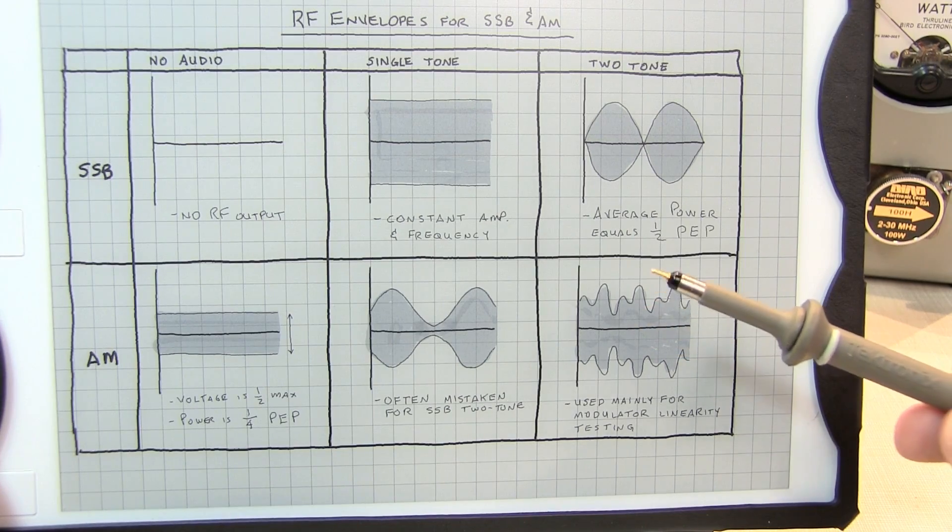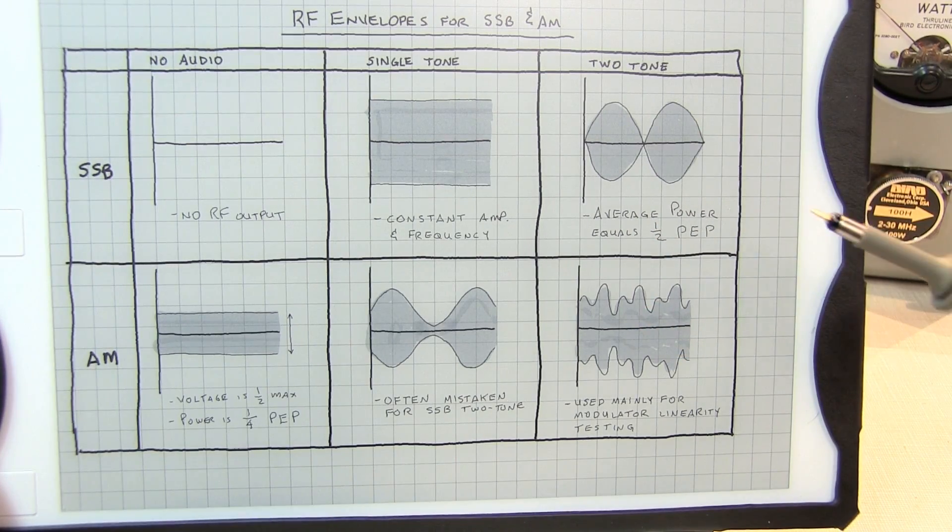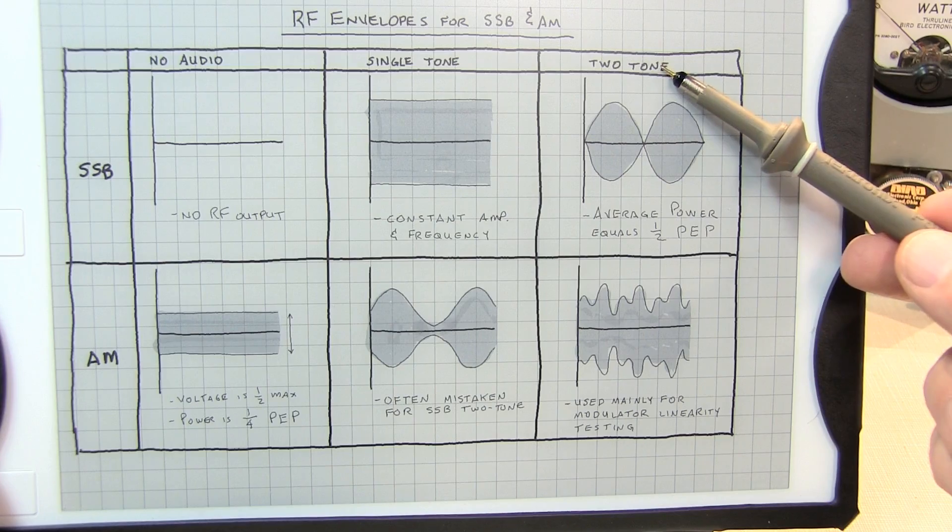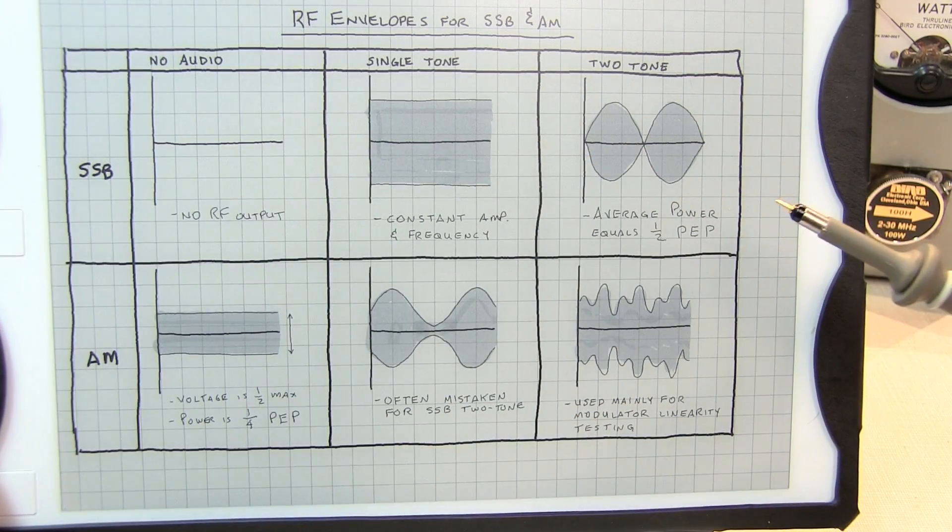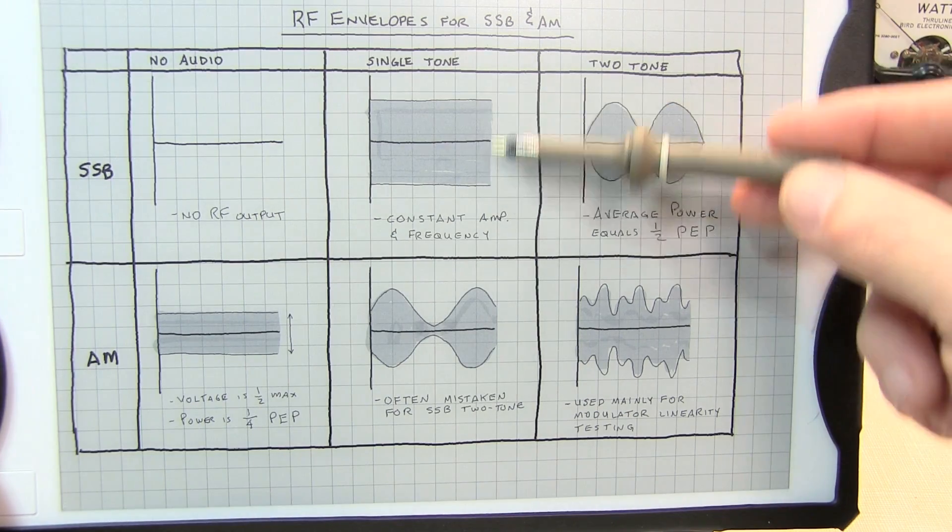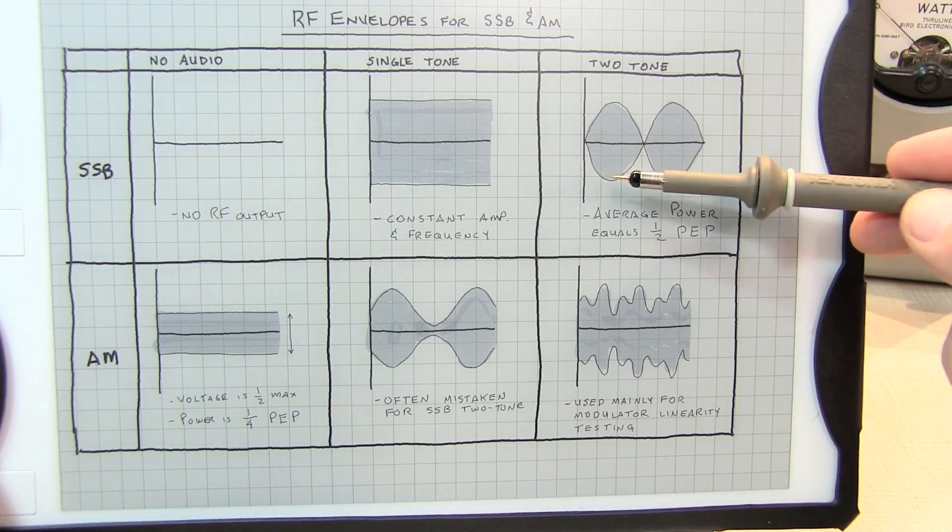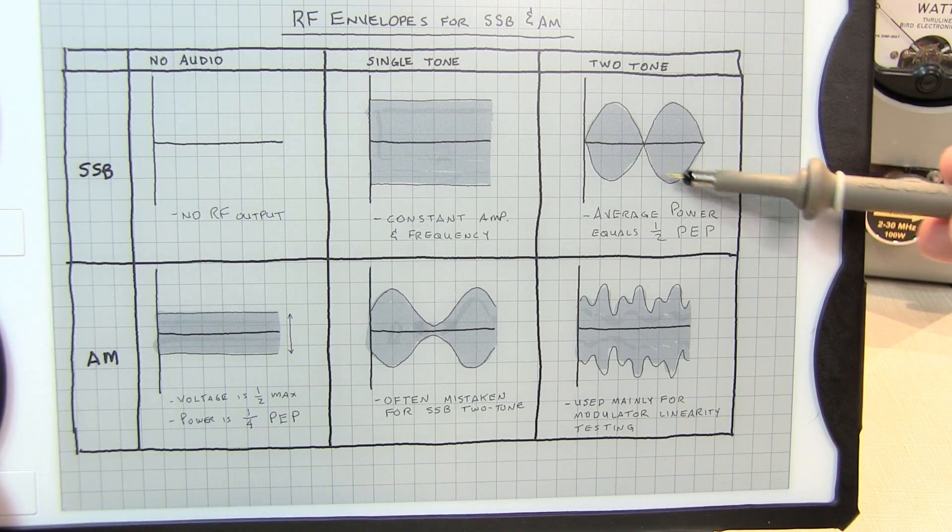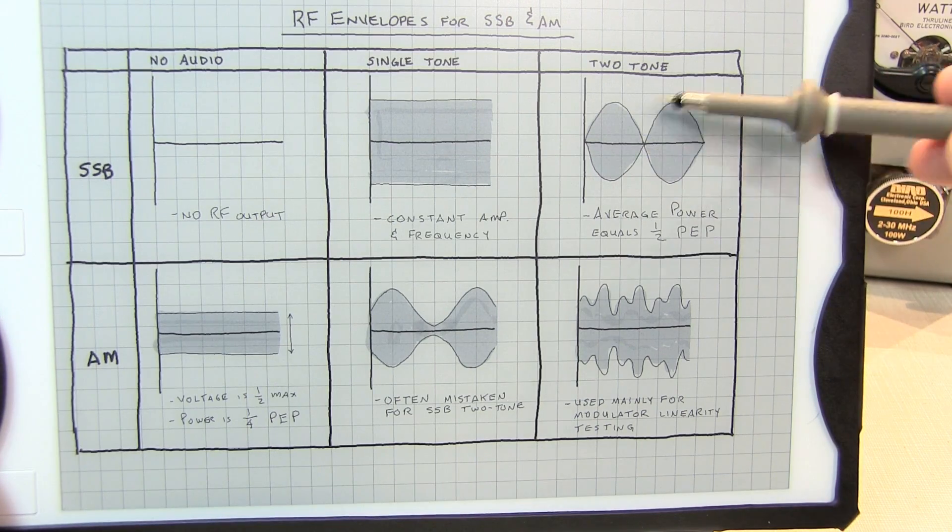So oftentimes, a two-tone measurement is used. If two audio tones are applied to a single sideband transmitter, and those tones are adjusted to create the same amount of RF excursion or the same amplitude, the resulting envelope will look very much like this.